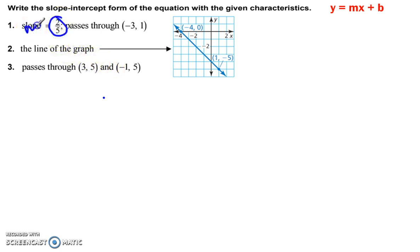Slope m equals 2 over 5, and it goes through this. Always label your points, x and y. We'll put 1 in for y, so 1 is equal to 2 fifths, and x is negative 3, plus b.